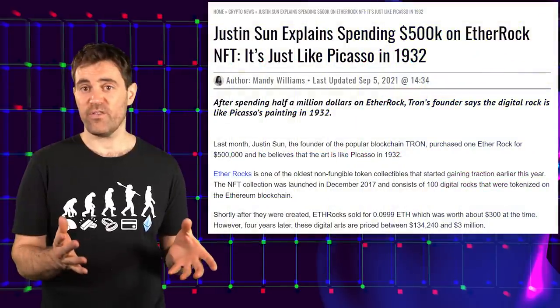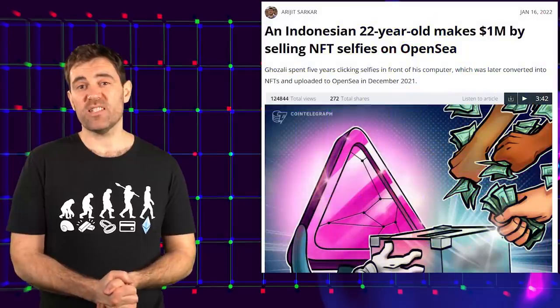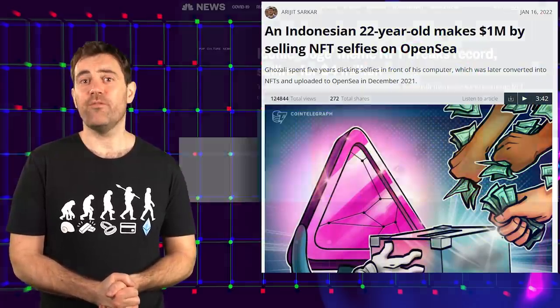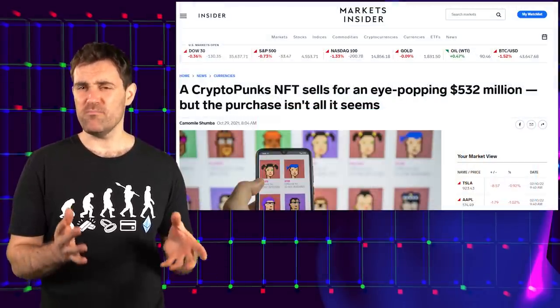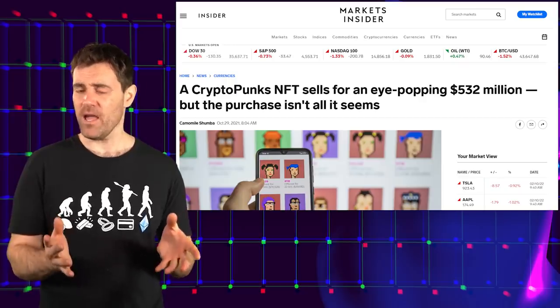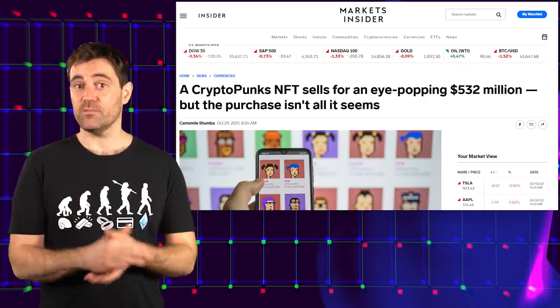A picture of a rock for $500k? Sounds fair. $1 million for selfies? Totally normal. $4 million for the Doge meme? Seems legit. $530 million for a pixelated JPEG? Oh wait, that was a flash loan.